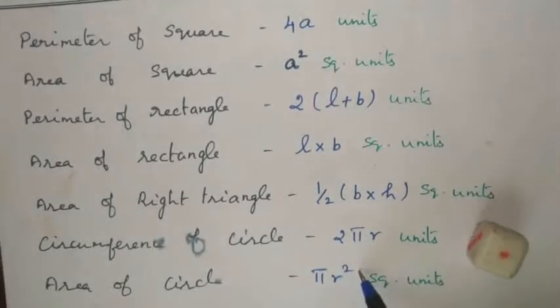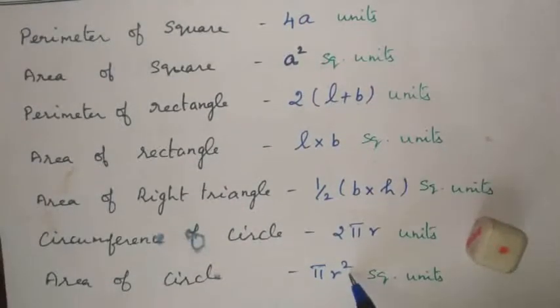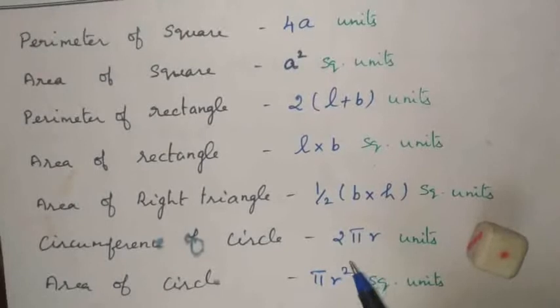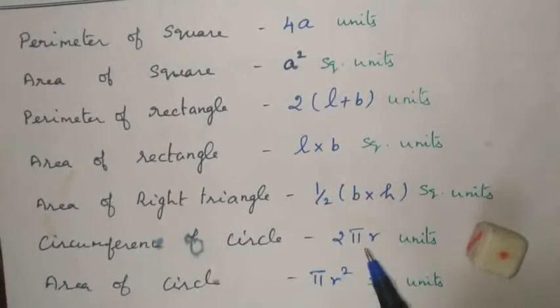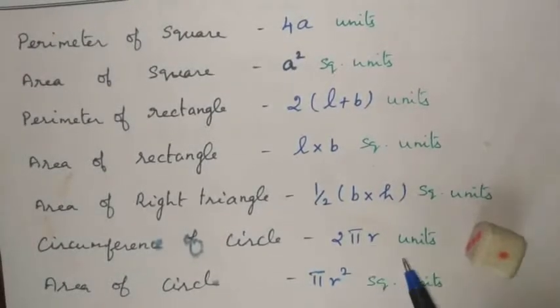Now let's look at the formulas for 3D shapes. We will cover lateral surface area (LSA), total surface area (TSA), and volume for each shape.